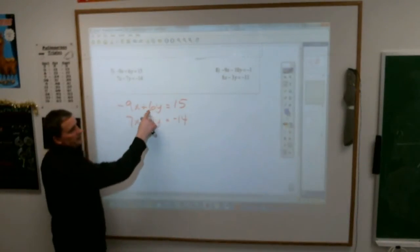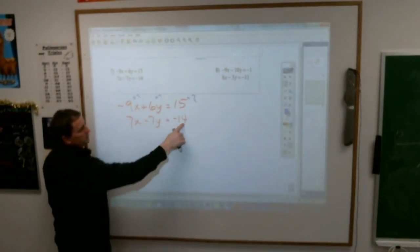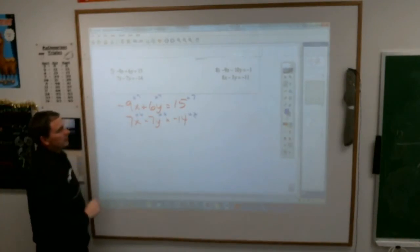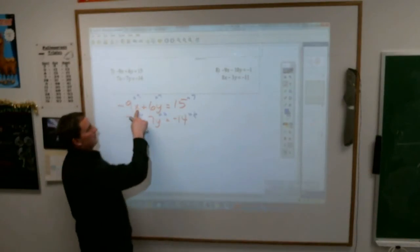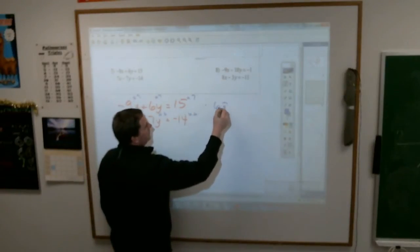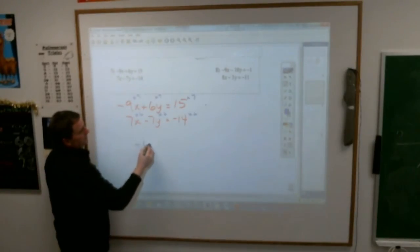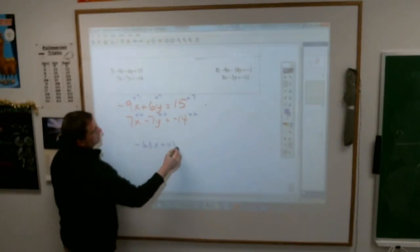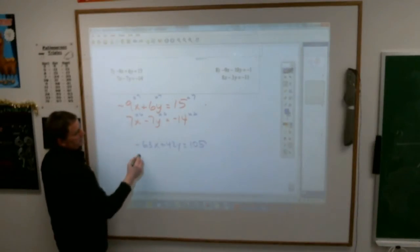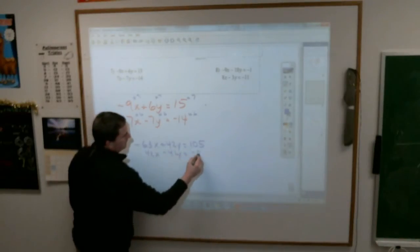So that means I need to multiply, to get 42, I have to multiply everything on top by 7. And to get 42s on the bottom, I need to multiply everything on the bottom by 6. And you are 8th grader, so big numbers may come up here. I get, doing this top one here, negative 63x plus 42y equals 105 for the top one. The bottom one gives me 42x minus 42y equals negative 84.